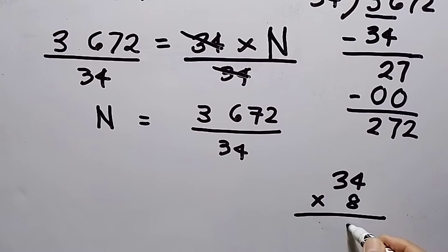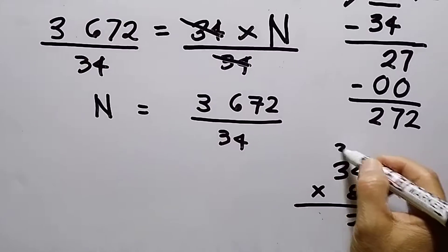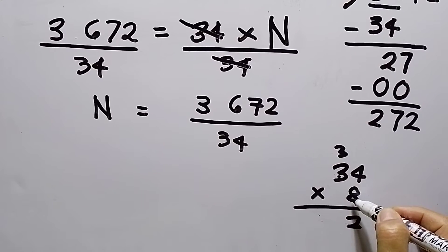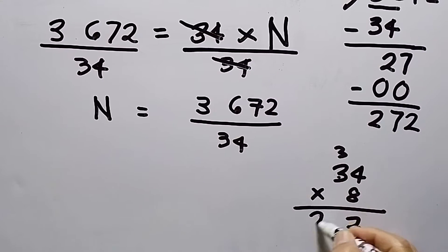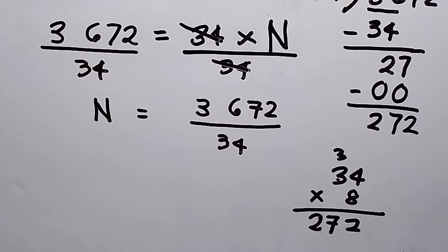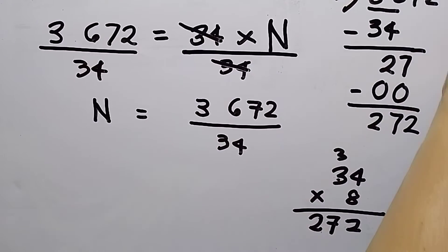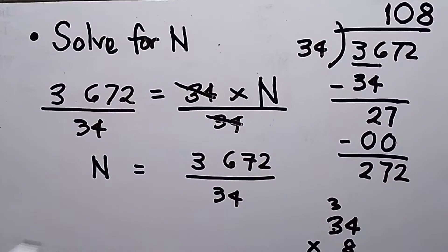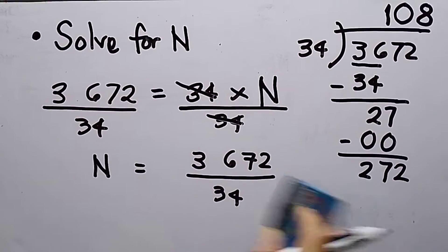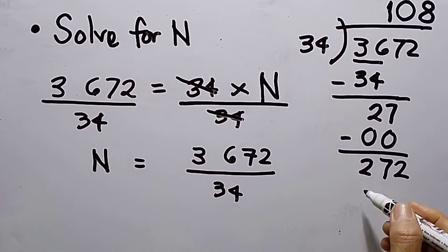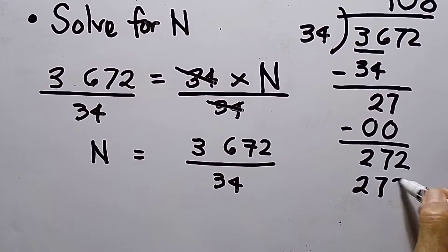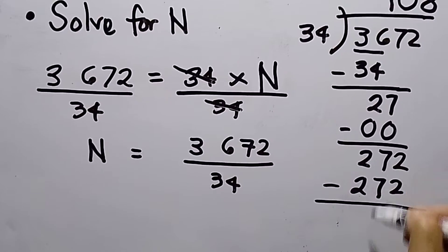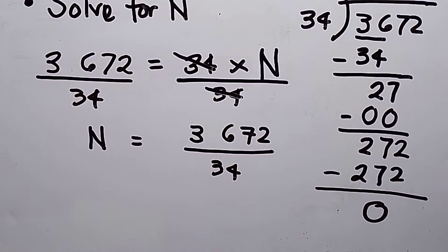This will be 32 carry 3. 24 plus 3 is 27. Oh, we got the correct answer. So this will be 8. And then multiply, that is 272. So this is 0.